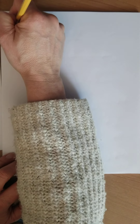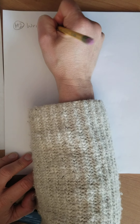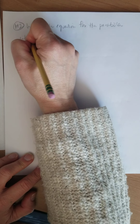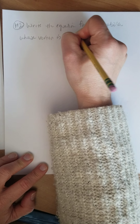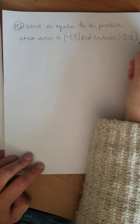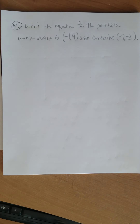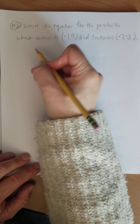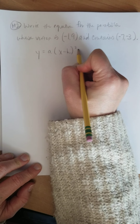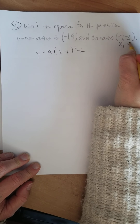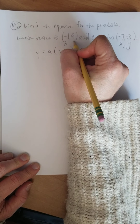Problem number two: write the equation for the parabola whose vertex is (−1, 9) and contains the point (−7, −3). Using graphing form: y equals a times (x minus h) squared plus k. Negative seven is the x, negative three is the y, negative one is h, and nine is k. So the equation has the form y equals a times (x plus 1) squared plus 9 — because subtracting a negative one gives plus one.